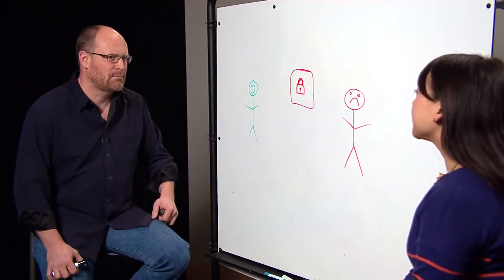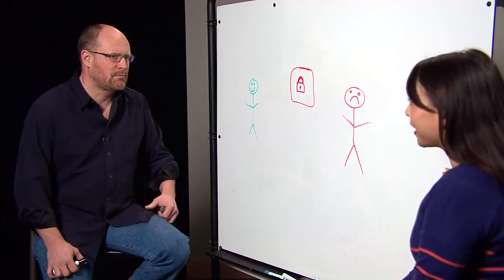But we still get a lot of questions from customers around how we manage the privacy and security of their data in Exchange Online. So what I wanted to focus on today is how we manage access in Exchange Online. I know we've discussed RBAC in the past, but what else do we do to manage access?